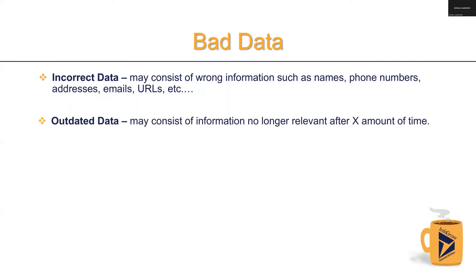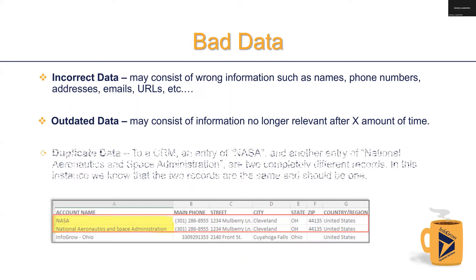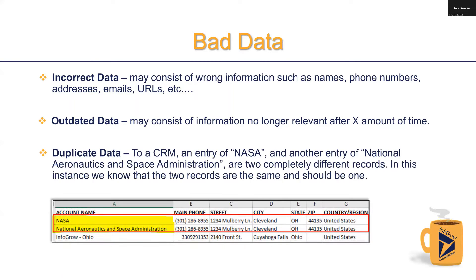Outdated data may consist of information that's no longer relevant. For example, a business might change its name due to a merger, or an employee might leave a business and now be associated with another. And if you've been tuning into our Brew sessions, you'll know all about this next one: duplicate data.